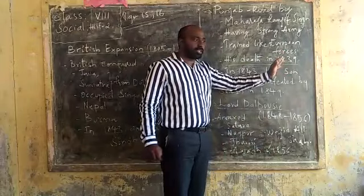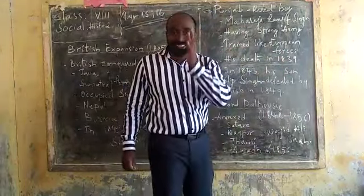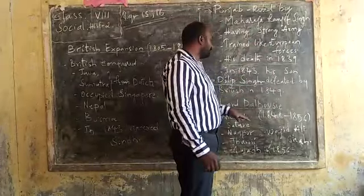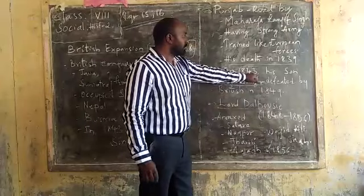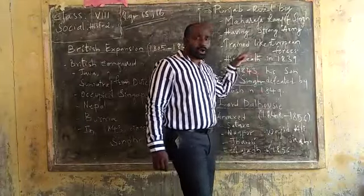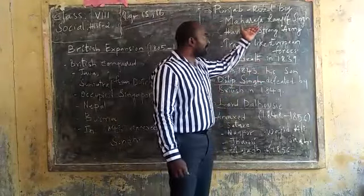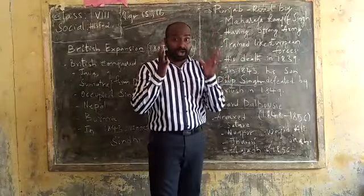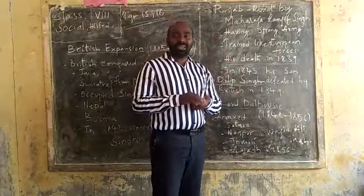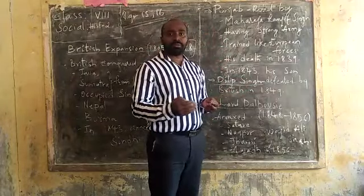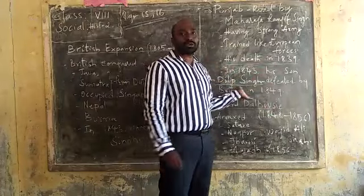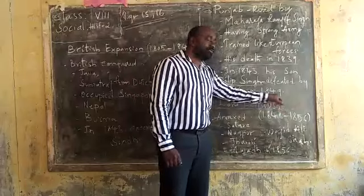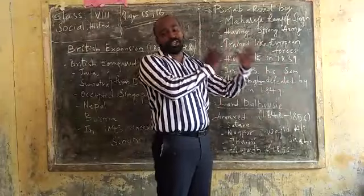When he died in 1839, obviously on a hereditary basis, King Maharaja Ranjit Singh's son, named Dilip Singh, occupied the throne in 1843. His son was not as strong as his father. He was unable to maintain the law of the strong army and unable to maintain the administration. Because of that, the British thought it was an advantage for them. They immediately declared war with Dilip Singh and he was defeated in 1849. When he was defeated in 1849, the Punjab region also went under the control of the British.